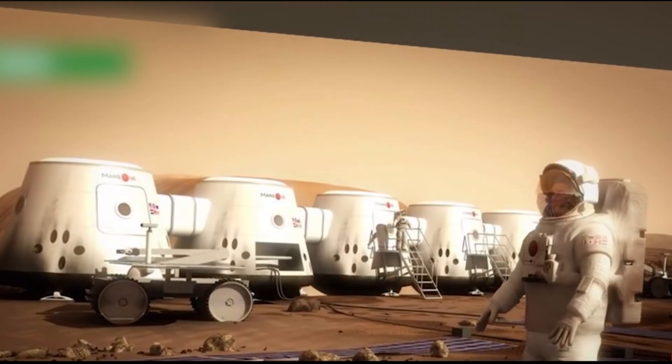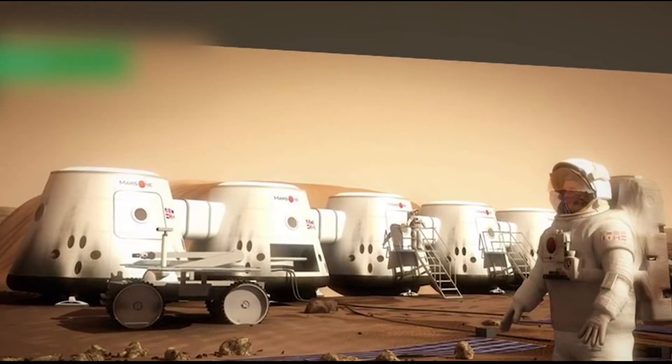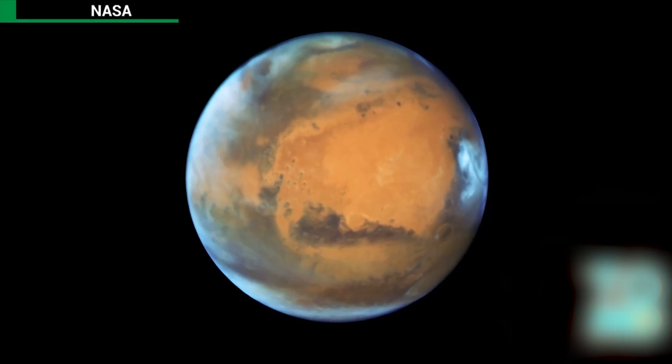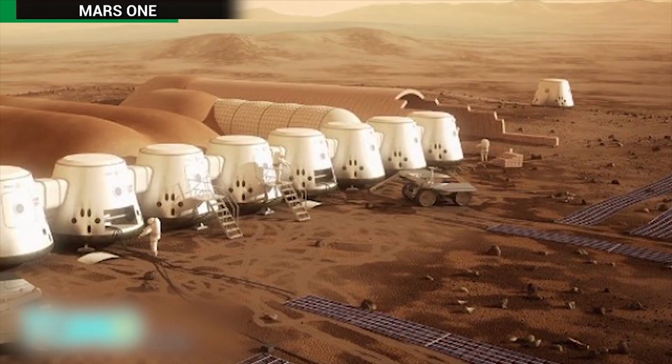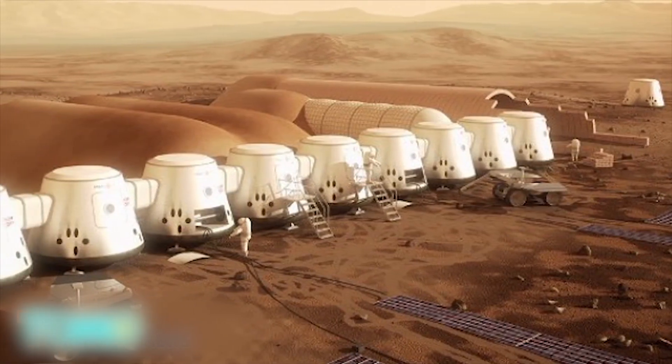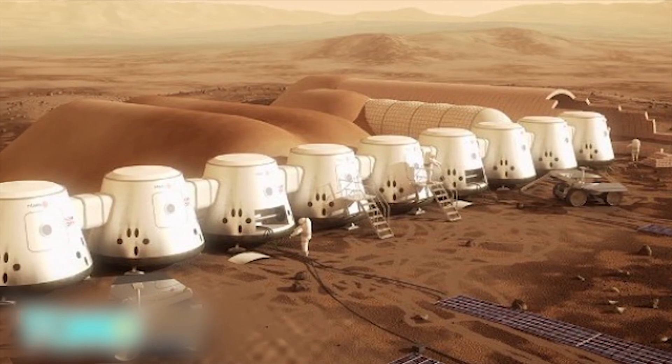Non-profit group plans permanent Mars colony. The race to Mars has begun. SpaceX chief executive Elon Musk says the company will send people to Mars by 2024, and he will reveal plans for colonization in September. Meanwhile, a non-profit group also aims to establish permanent Mars colonies, sending the first group of astronauts by 2026.